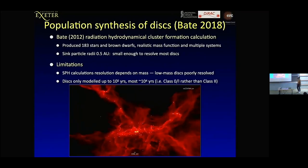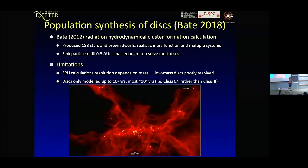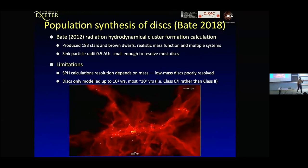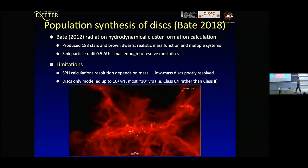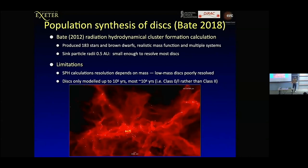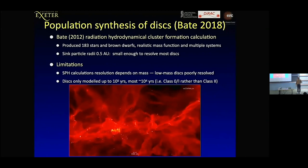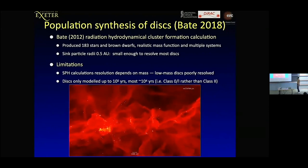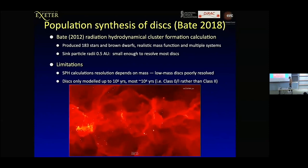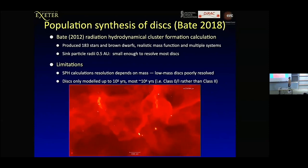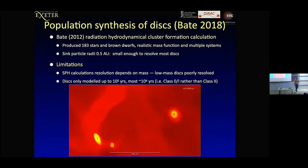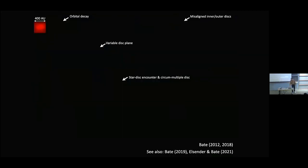What you don't see on this large scale — zooming in — is that we had the resolution to model discs around these stars as well. We used an accretion radius of 0.5 AU, which means you can resolve discs down to roughly AU sizes. You can look at the disc properties, at least for class zero objects with ages of around 50,000 to 100,000 years. There's a circumbinary disc there and these are two single stars.